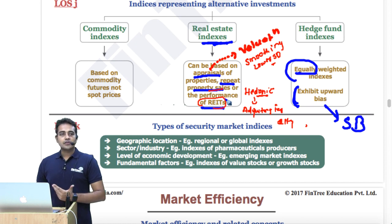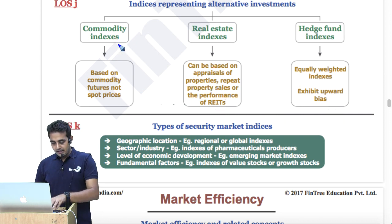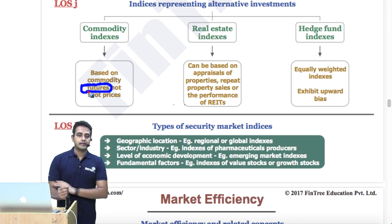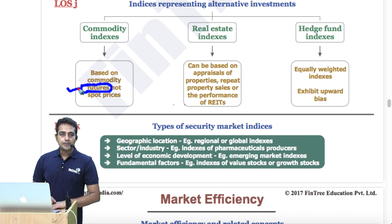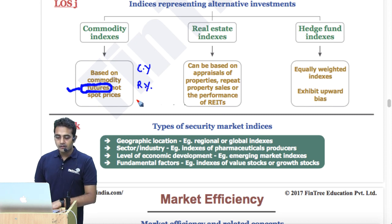There could also be an index based on REITs — REITs are shares, so that index would be built like any other shares index. Commodity indices are very important: they are based on futures prices, not spot prices. Remember — commodity indices are not made using spot prices, they are made using futures. Linking to alternatives, you earn returns through collateral yield, roll yield, and price yield or spot movement.